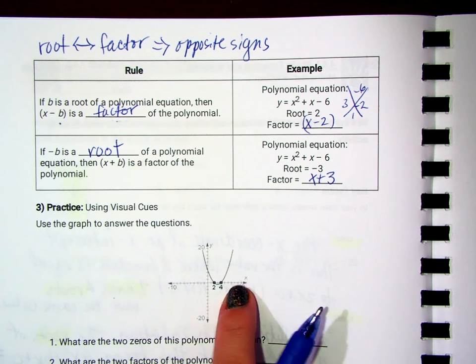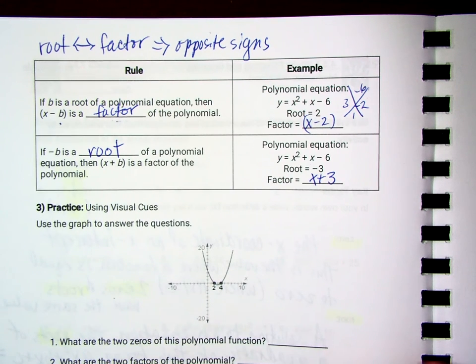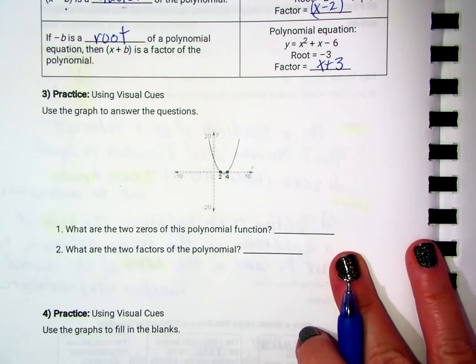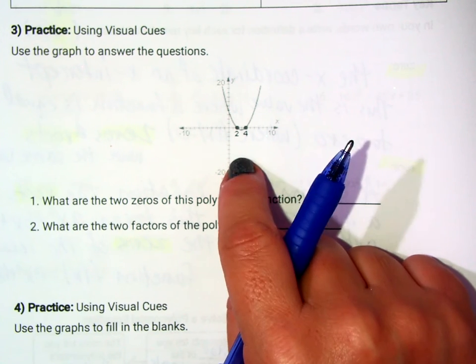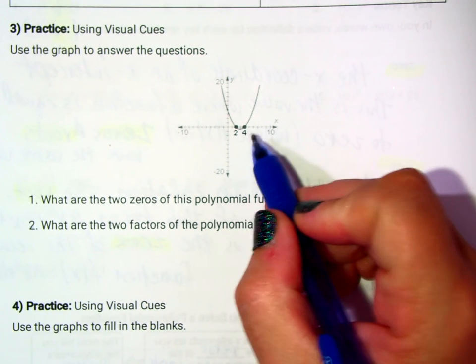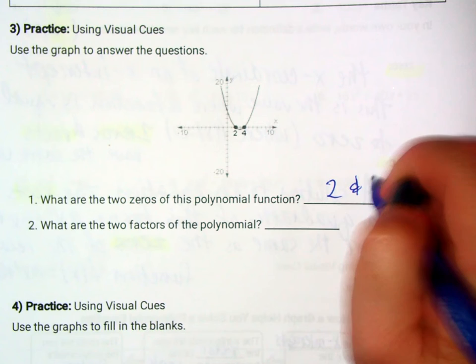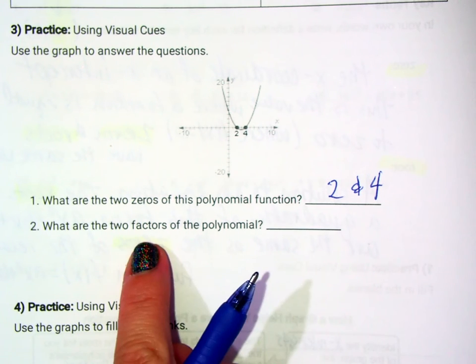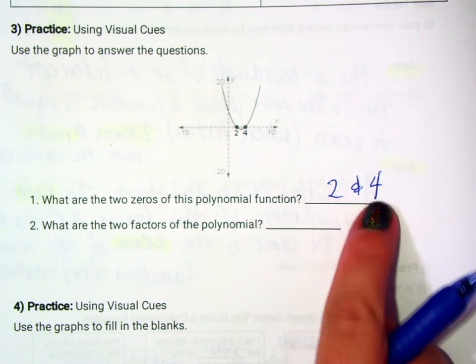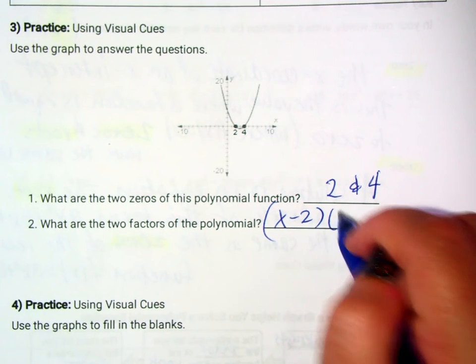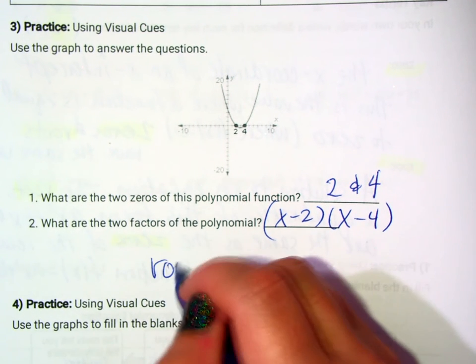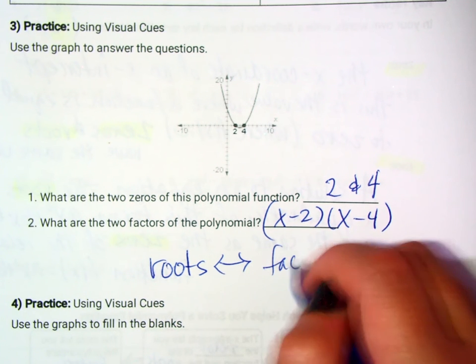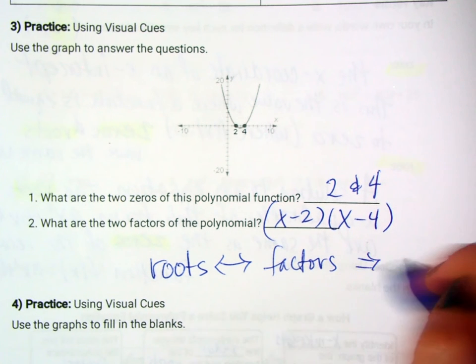Now let's use a graph to answer questions. Notice in the picture that 2 and 4 are the x-intercepts of this graph. So the two zeros of this polynomial function are positive 2 and positive 4. The two factors of the polynomial, since the roots are 2 and 4, are x minus 2 and x minus 4. Roots and factors have opposite signs.